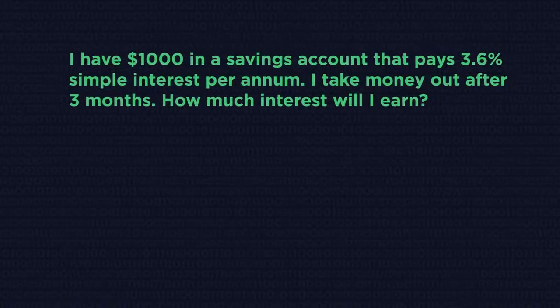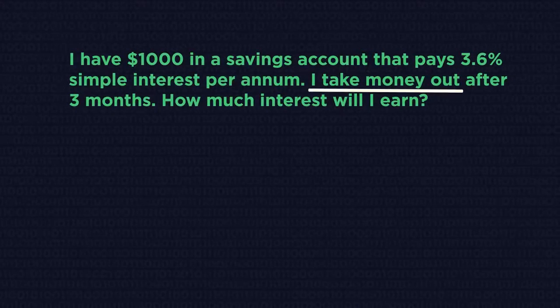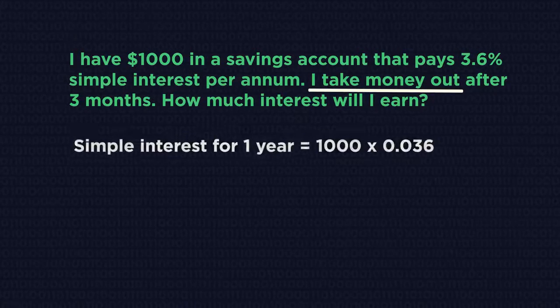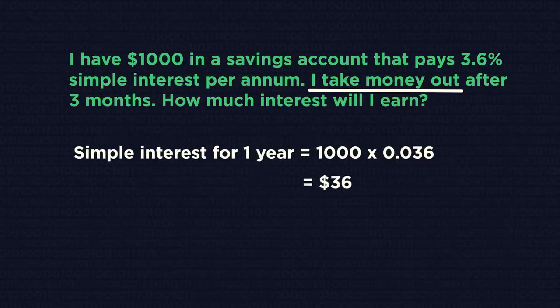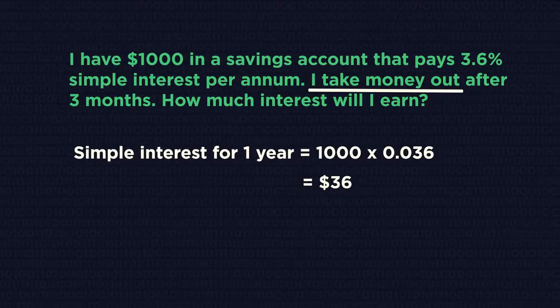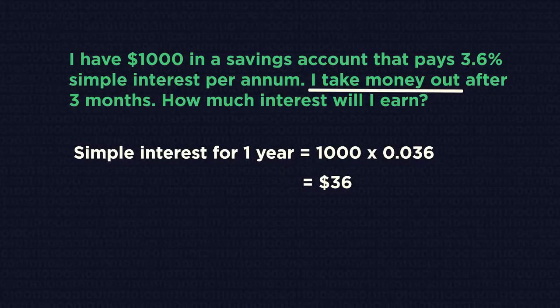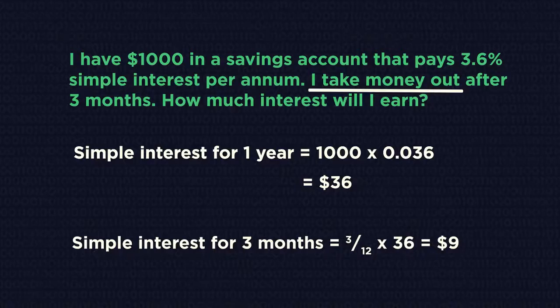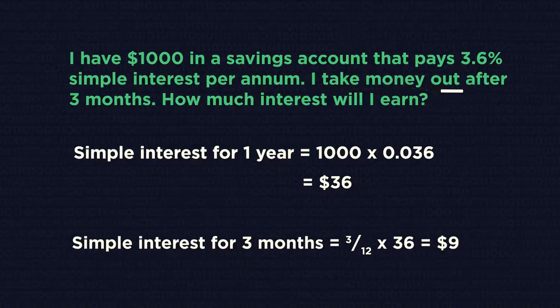If money isn't left in a bank account for a whole year, only a fraction of the simple interest is paid. Work out what the full interest would be and then take a proportion of it. So I only earn three twelfths of the total interest.